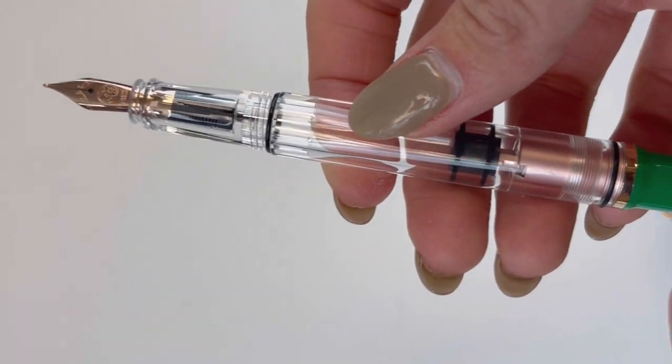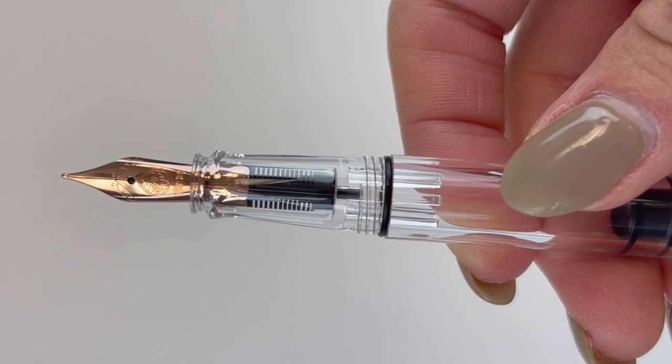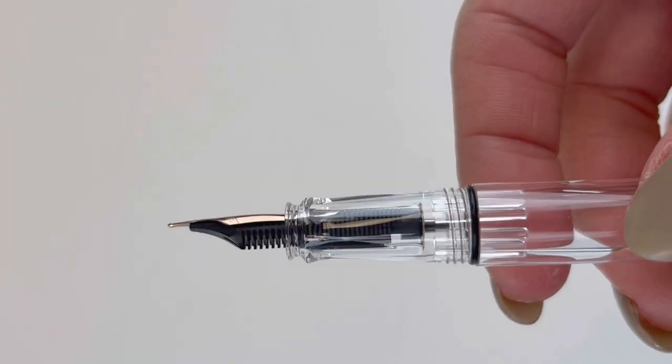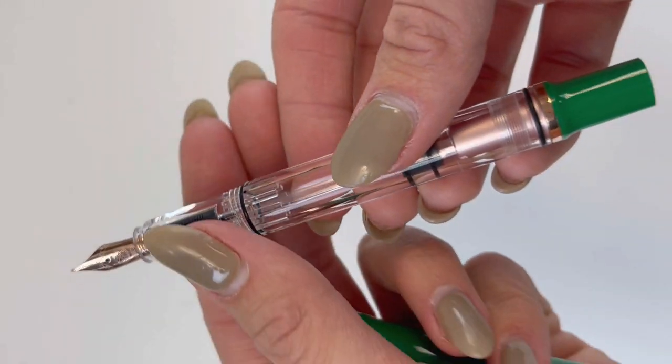Your TWSBI Eco-T Royal Jade Fountain Pen is fitted with a rose gold plated stainless steel number 5 nib, and it features TWSBI's very popular piston filling system.